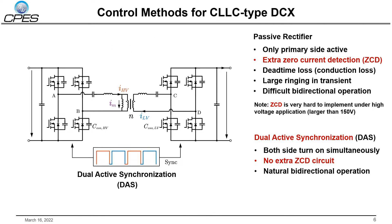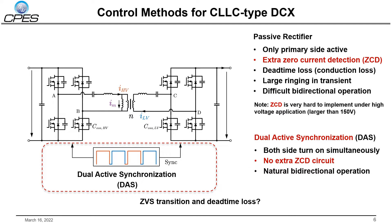To address these problems in passive rectifier, a natural bidirectional modulation has been adopted recently, with which the driving signals of the primary side and secondary side are identical. Since this modulation has many different names in the literature—such as dual active control, active rectification, and sync turn-on and turn-off modulation—this presentation gives it the name dual active synchronization (DAS) modulation. Compared with the passive rectifier, DAS modulation has merits such as no extra ZCD circuit and natural bidirectional operation. This presentation will focus on DAS modulation and give a comprehensive analysis, including the transition and dead time loss.